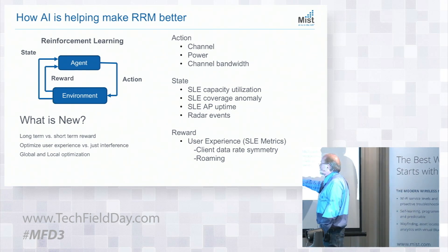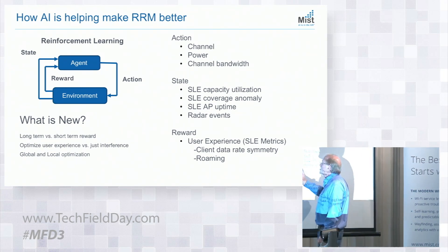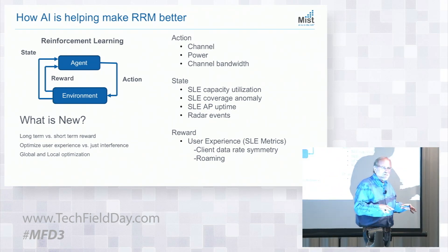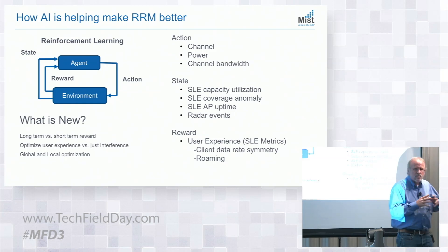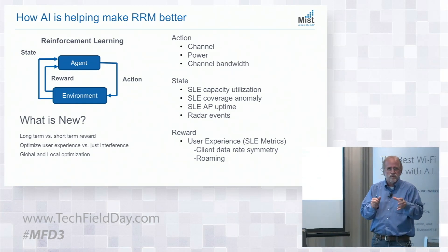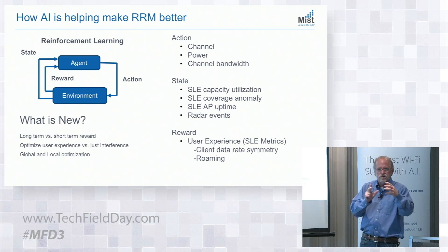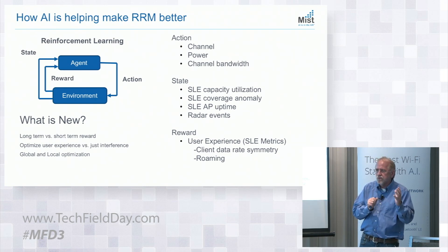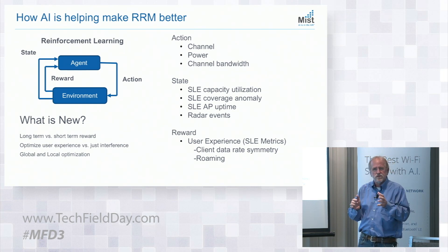So the big change is the reward system is different. The other big change is these AI algorithms look over broader time horizons. In the past, we were trying to optimize noise over some small period of time. Now we're looking at data from a week or month ago, which lets you start to get much more intelligent, long-term reward decisions.